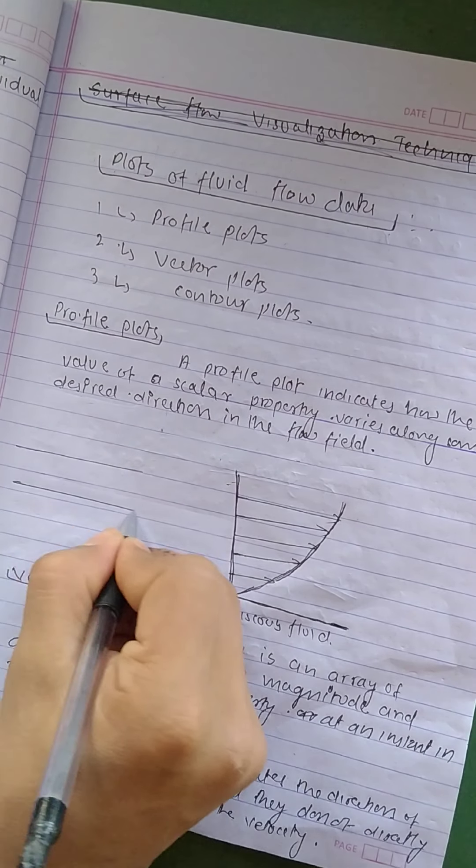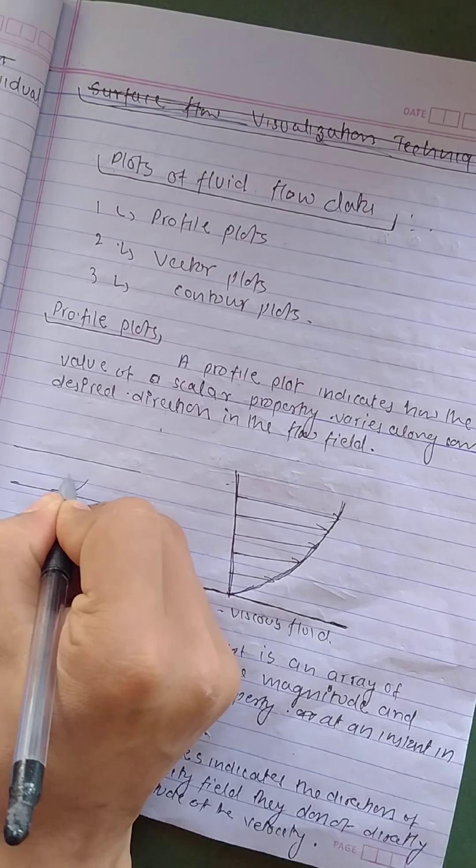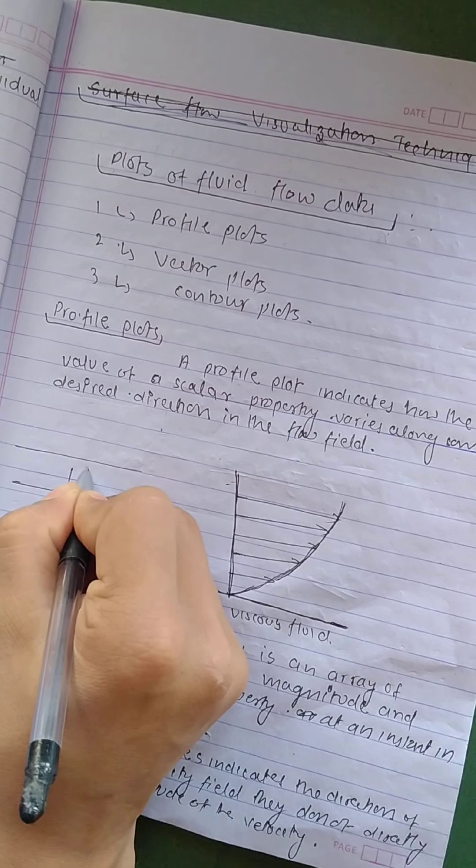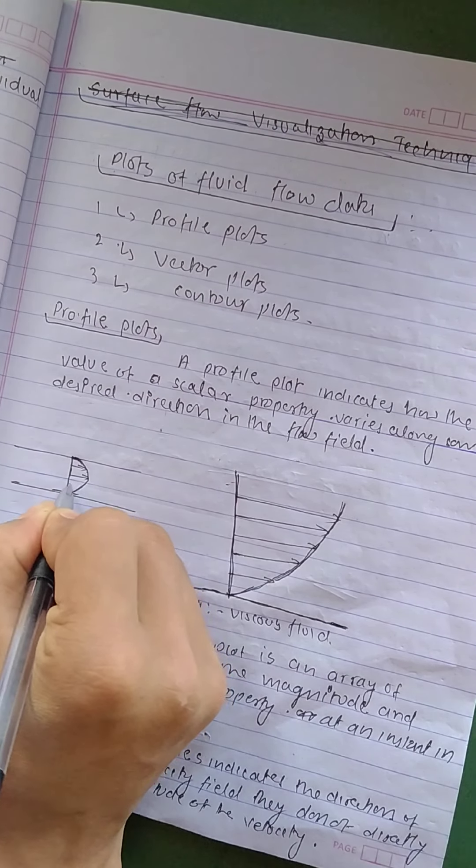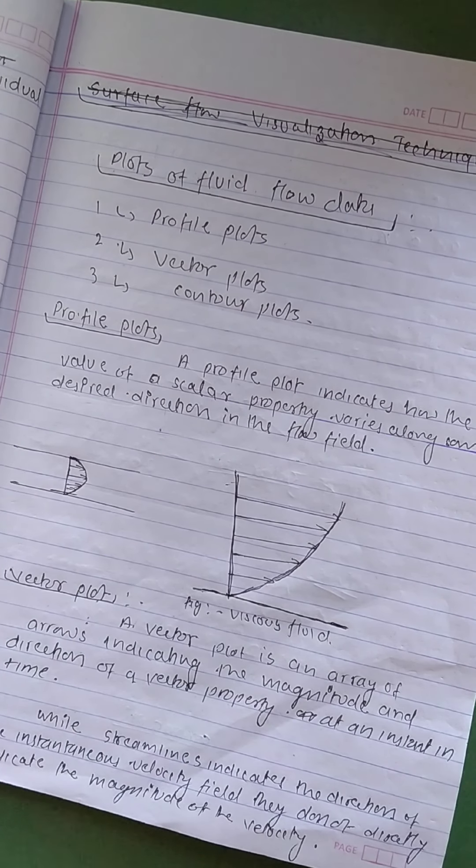So at the center of the pipe, the velocity is maximum. It is increasing from the boundary and then it will decrease on the other side. So this is a velocity field.